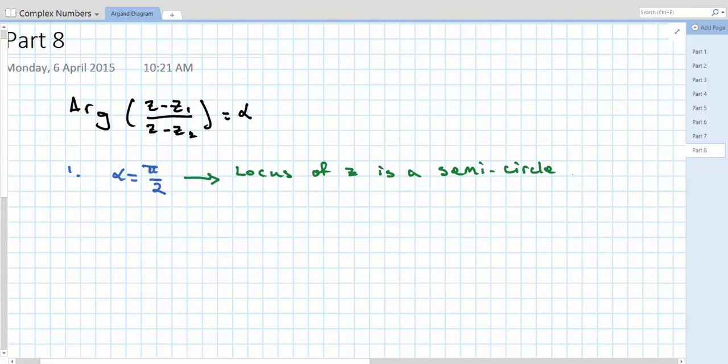where the diameter is z1z2, as opposed to previously when z1z2 was just a chord.